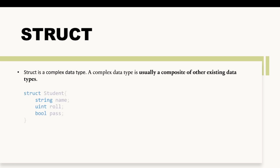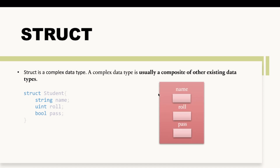For example, if I want to create a struct data type for a student, it will look like this: 'struct Student { string name; uint roll; bool pass; }'. This single data type represents three different properties of different data types — name is string, roll number is uint, and pass is bool.